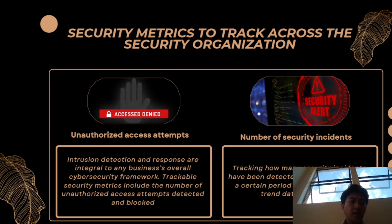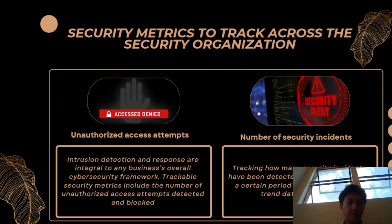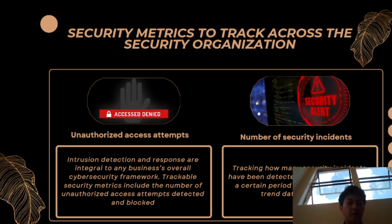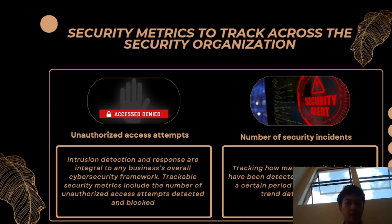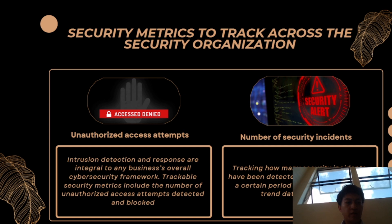Another critical metric is unauthorized access attempts — one of the most common forms of data breaches. This refers to instances where intruders attempt to gain unauthorized access to the system, which can have severe consequences if successful. Organizations must also monitor the number of security incidents, which counts all reported incidents within a system. Tracking this metric is vital to developing strategies and action plans to address vulnerabilities and prevent future occurrences.